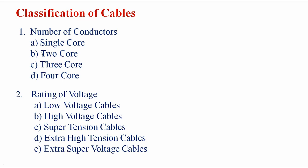Based on operating voltage rating: up to 1 kV (1000 V) the cable is a low-voltage cable. Operating voltage up to 11 kV is a high-voltage cable. Up to 33 kV it is a super-tension cable. Up to 66 kV it is an extra high-tension cable.